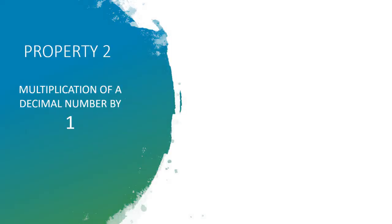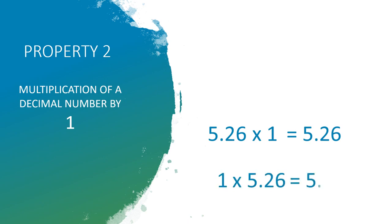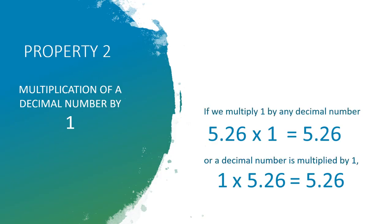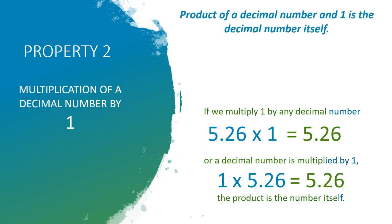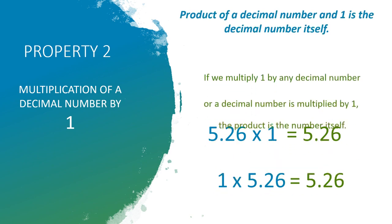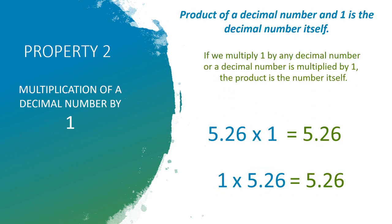Second property: Multiplication of a decimal number by 1. For example, 5.26 x 1 is equal to 5.26, or 1 x 5.26 is equal to 5.26. So what you observe? If we multiply 1 by any decimal number, or a decimal number is multiplied by 1, the product is the number itself.